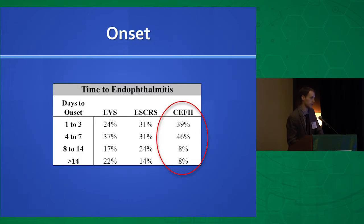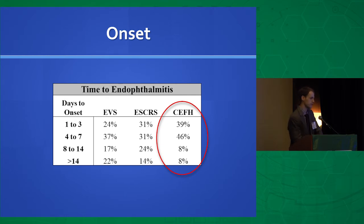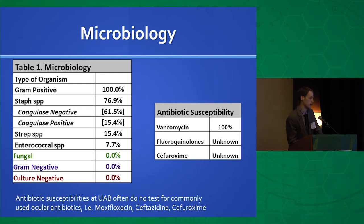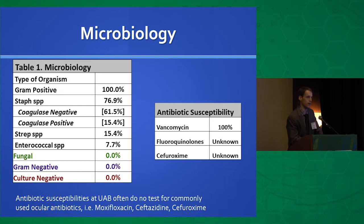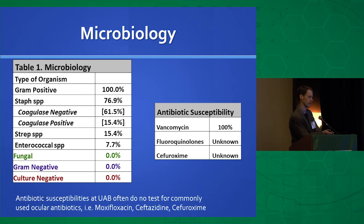Looking at the onset of endophthalmitis, compared to a study from Bascom Palmer which saw more delayed cases, our average onset was about five days, with a number of cases presenting within one to three days of cataract surgery. Microbiology fit with other studies — it was 100% gram-positive organisms, mainly coag-negative staph at 61% of all cases. A key issue identified was the lack of an ophthalmology-specific antibiogram, as cultures were checking for systemic drugs rather than those we actually use.